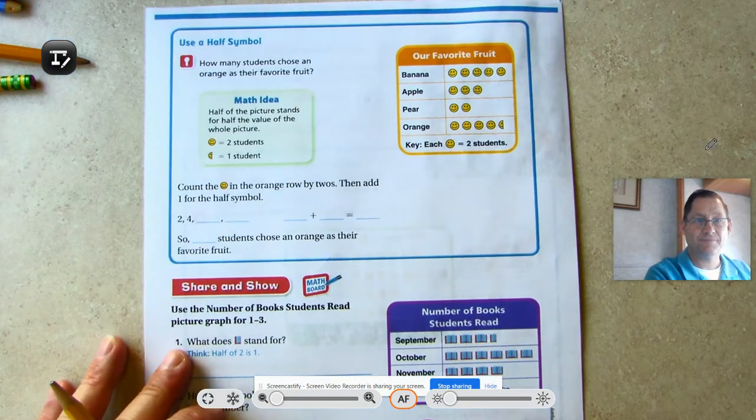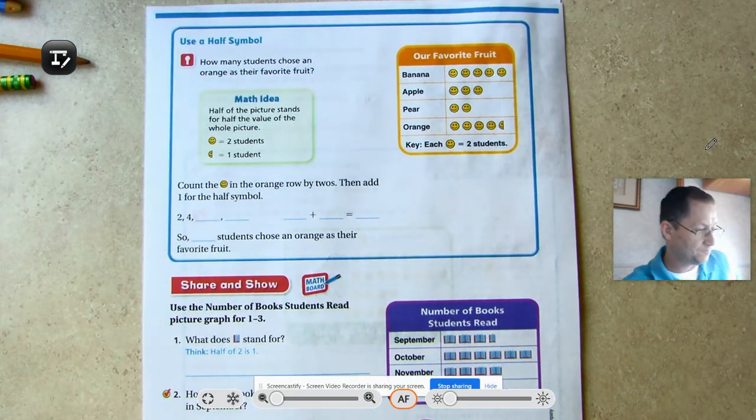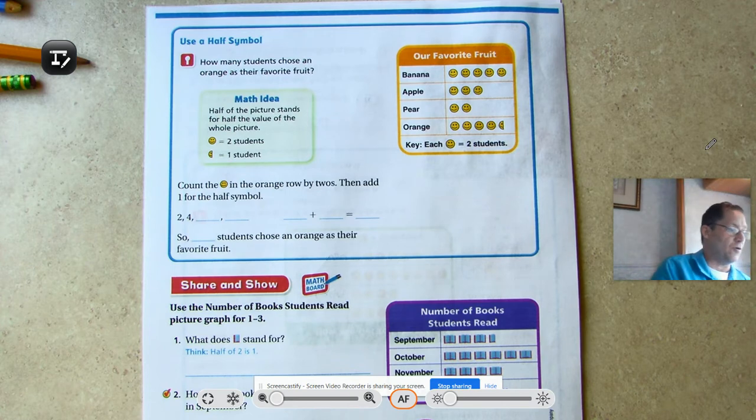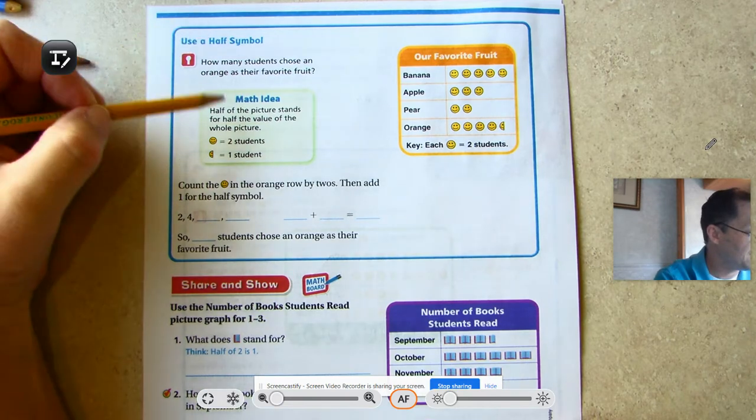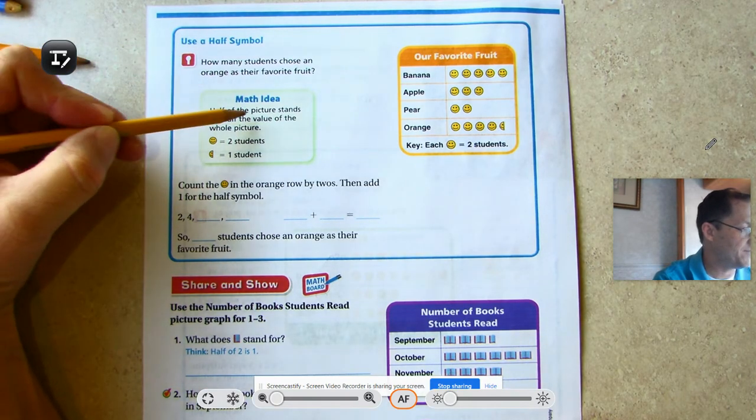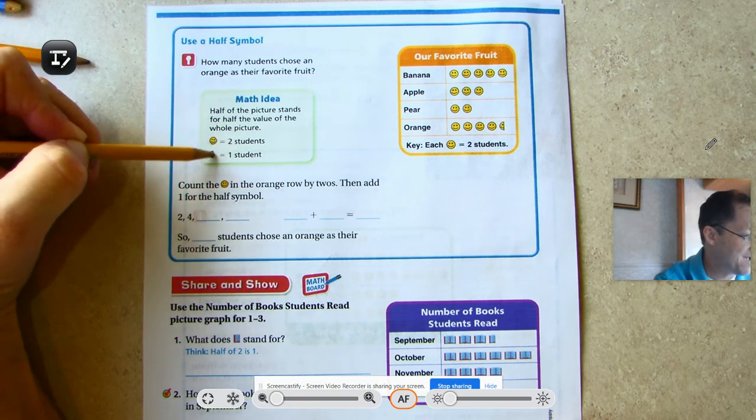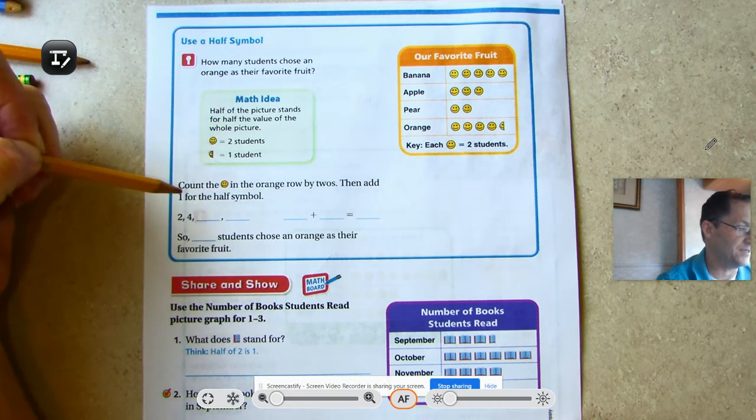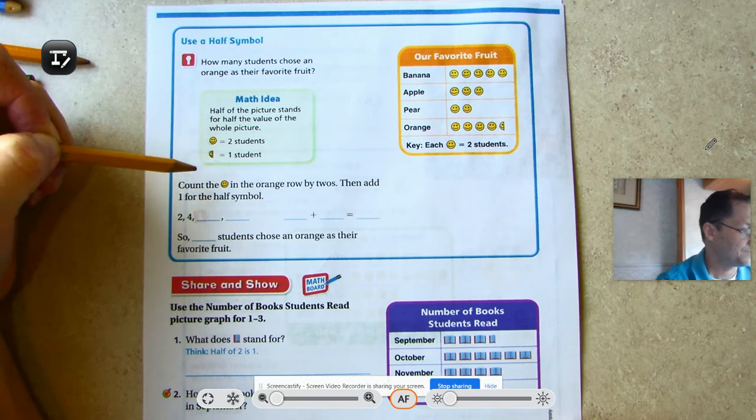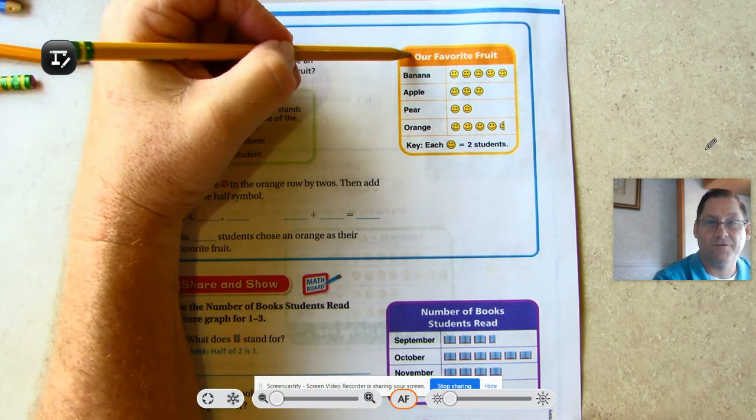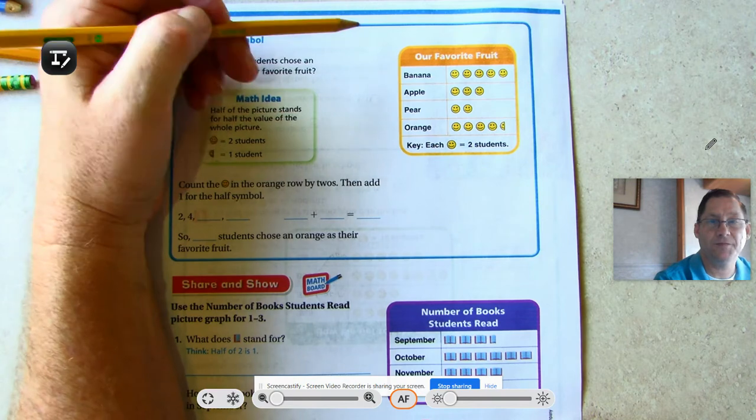All right, using half a symbol. How many students chose an orange as their favorite fruit? Half of the picture stands for half the value of the whole picture. So a happy face stands for two students. If you had half of a happy face, that would be one student.